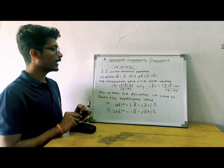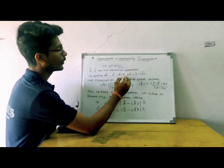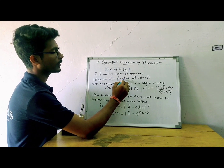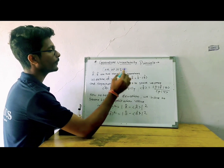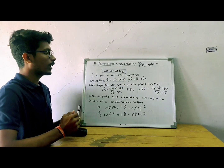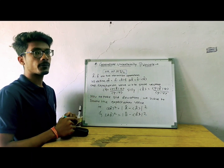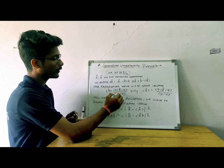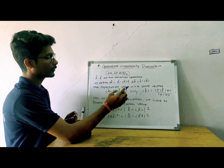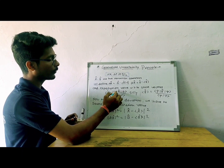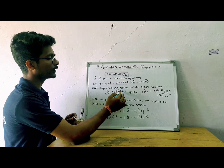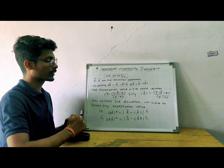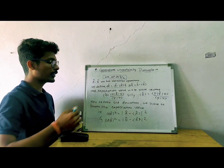Let us define a function: del A equals A minus the expectation value of A. Similarly for del B. The expectation value with respect to state vectors can be represented as the expectation value of A, written in bra-ket notation as ⟨ψ|A|ψ⟩ divided by the normalized condition for state vectors. Similarly taken for B.